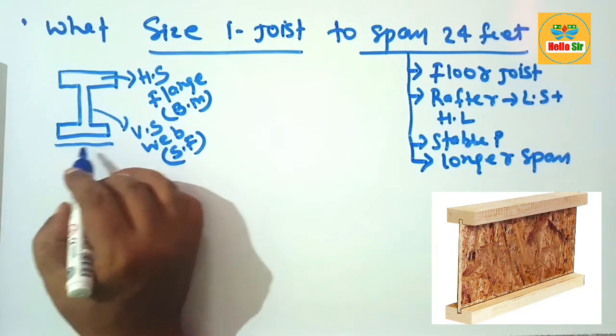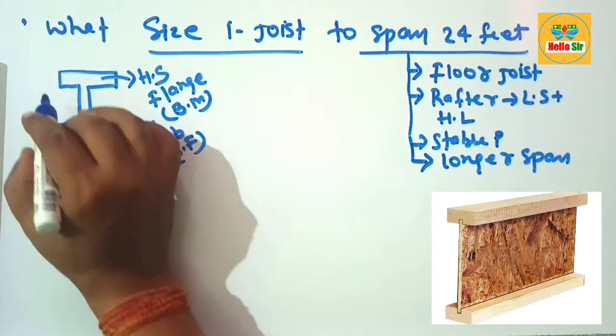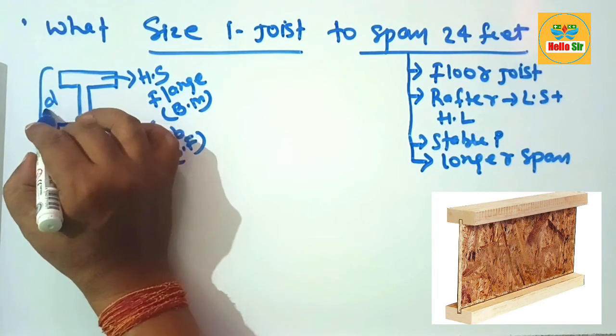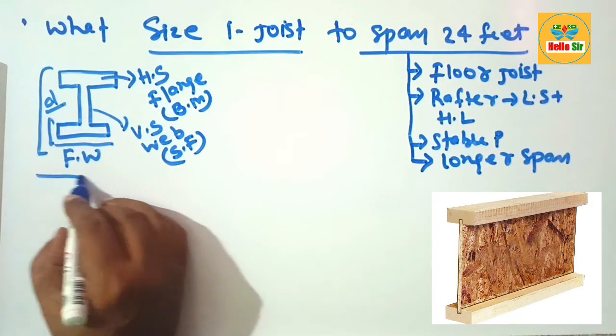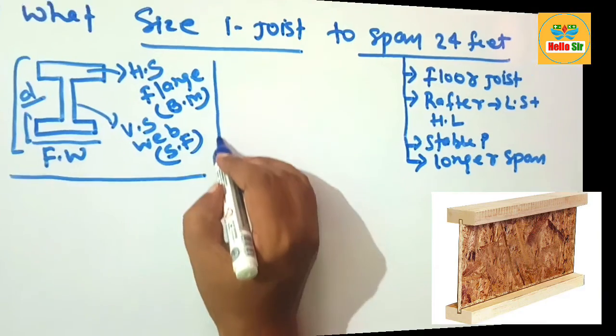This is the flange width, this is the thickness of the flange, this is the depth of the joist, and this is the web thickness. These are the several dimensions for the I-joist.